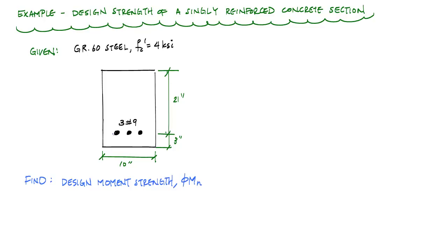The word singly just means I have a single layer of steel in the tension side of my beam here, and all that steel is made of grade 60 steel, and the concrete here is composed of 4 KSI concrete.